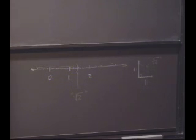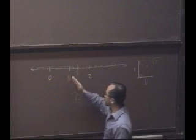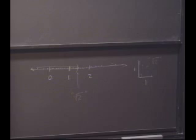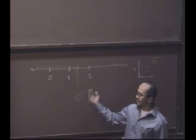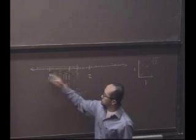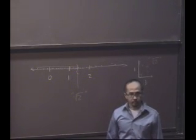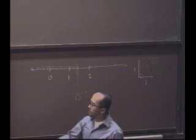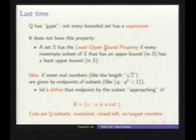A cut is—you just think of actually cutting the rationals at a particular point and looking at everything to the left. So a cut is a subset of rationals that's not trivial, so it's not empty and it's not everything, not all the rationals. It's closed to the left, or closed downward as we might say, and it has no largest member. That's what a cut is. And then the real numbers will just be the set of all cuts. This is what we saw last time.